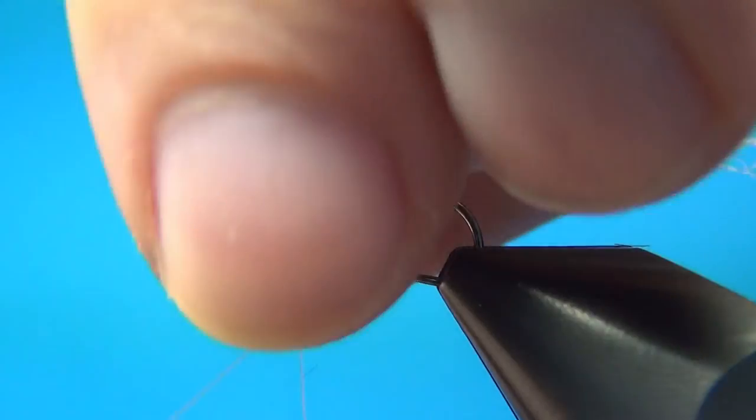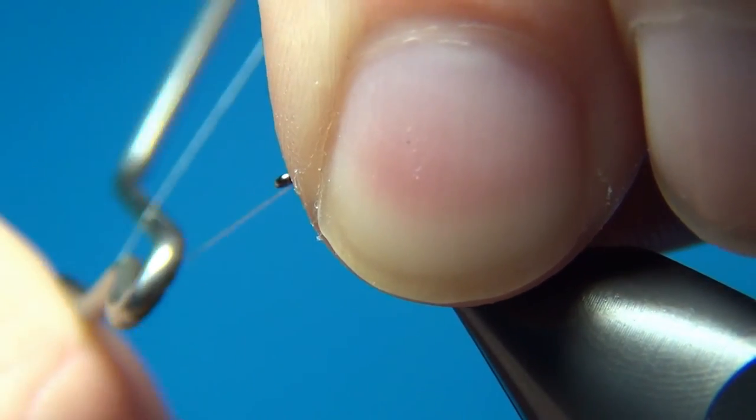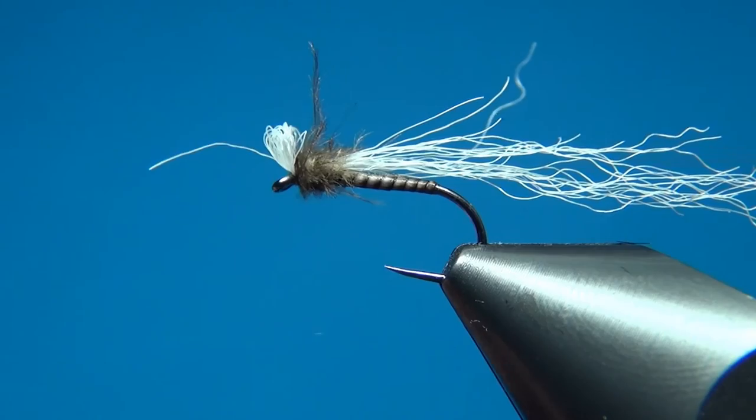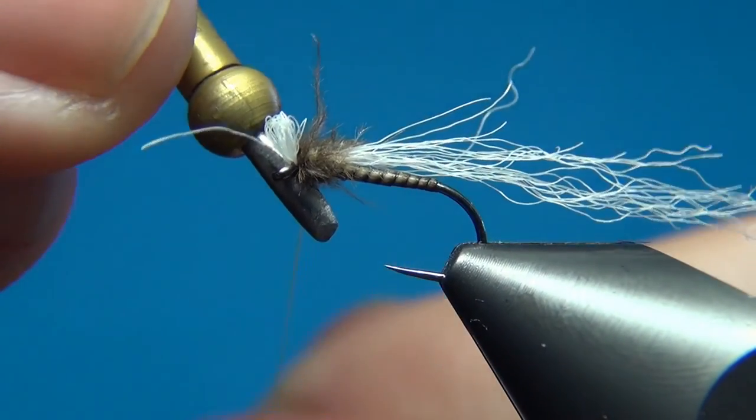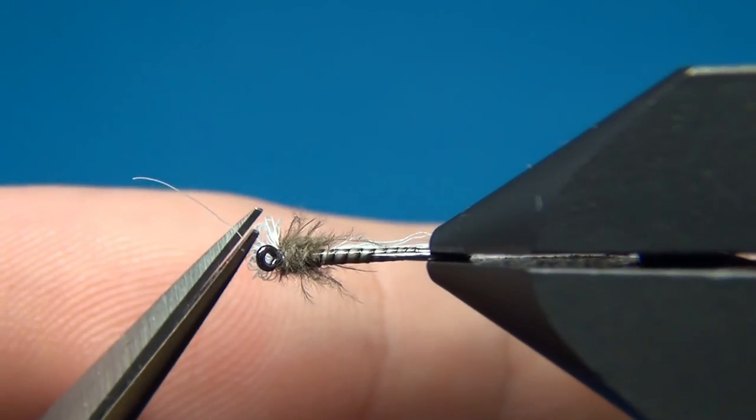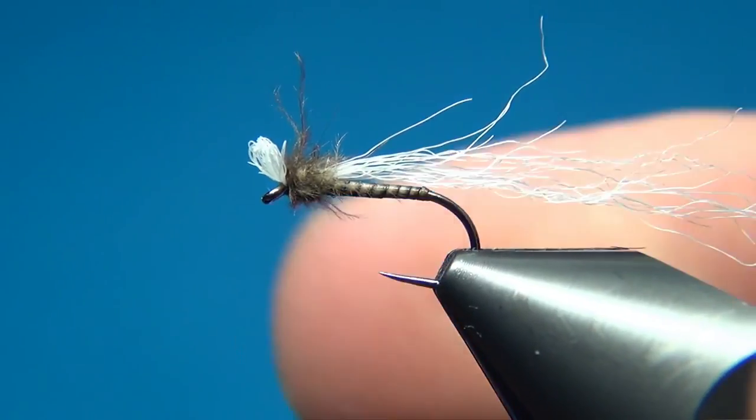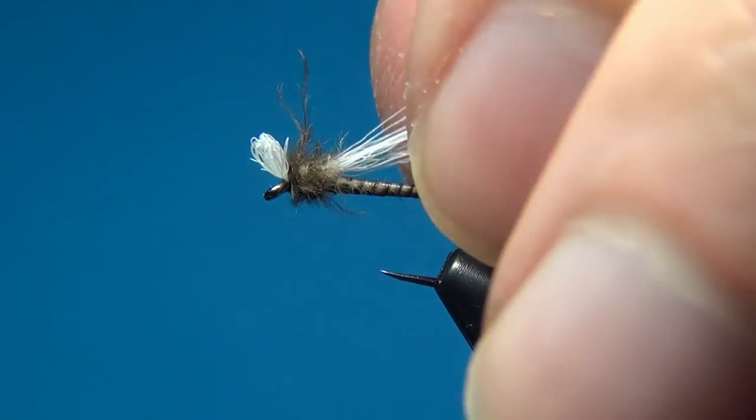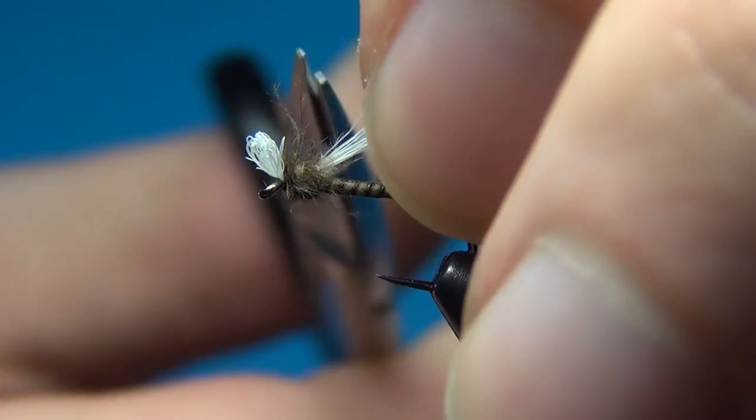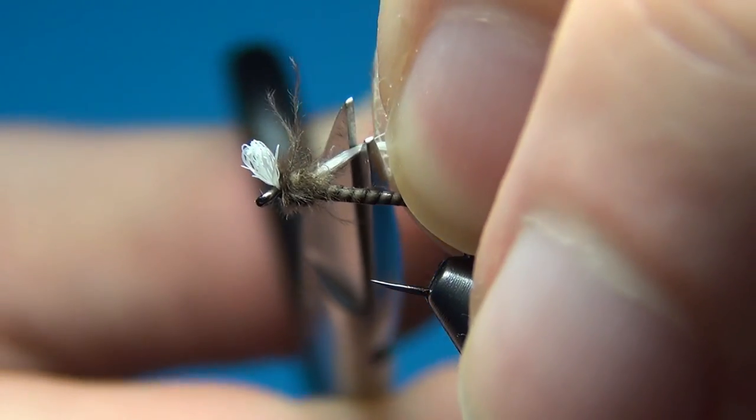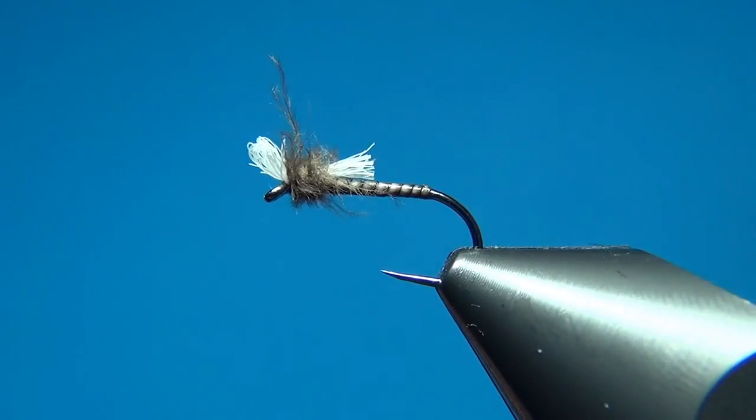And then the last thing to do is to whip finish before continuing cutting off materials. So three turns. Pull tight. And here I have one fiber that's just a little bit too long, so cut this down. And then what you will do is cut these fibers off here that are standing right to the back. And we want to cut this off quite close.